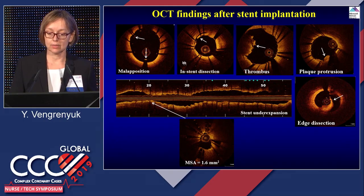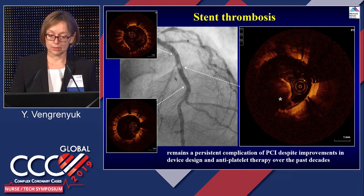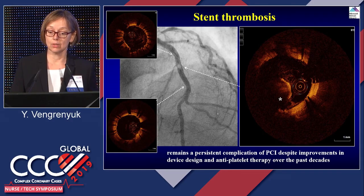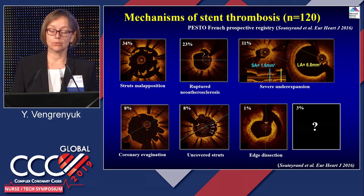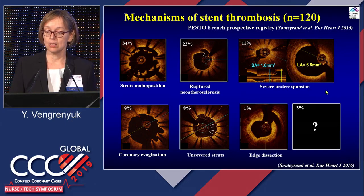Typical OCT findings after stent implantation include malapposed struts, stent dissection, thrombus, plaque protrusion, edge dissection, and stent underexpansion. Stent thrombosis remains a persistent complication of PCI, and angiography has limitations in detecting it. OCT is a very helpful tool to characterize the mechanism of stent thrombosis. In recent retrospective studies, stent malapposition, ruptured neoatherosclerosis, and severe stent underexpansion were identified as the most common mechanisms.